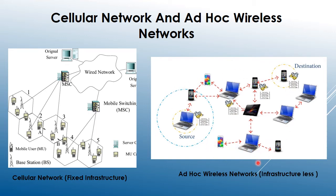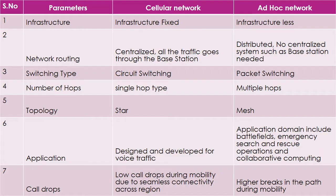The mobile ad hoc network is also referred to as a heterogeneous network because it consists of different kinds of devices — laptops, smartphones, tablets — all communicating with each other. The first comparison point is infrastructure: cellular network has fixed infrastructure, while ad hoc network is infrastructure-less. For routing, all traffic goes through the base station in cellular (centralized), whereas ad hoc uses distributed routing with no centralized base station.